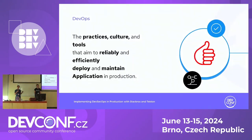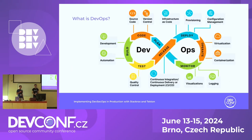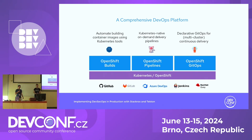Most of you probably know the concept of DevOps — it's basically a practice, culture, and set of tools to make software development more efficient. It's about collaboration and continuous improvement, where several silos within an organization work together on software development and delivery. For DevOps on OpenShift, a typical toolset includes Tekton, Argo CD, and build packs to build and deploy software onto the platform.